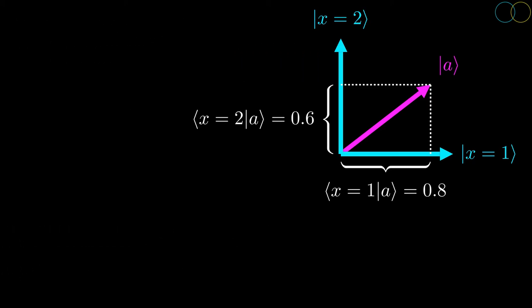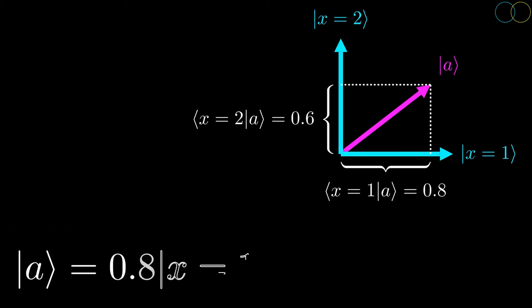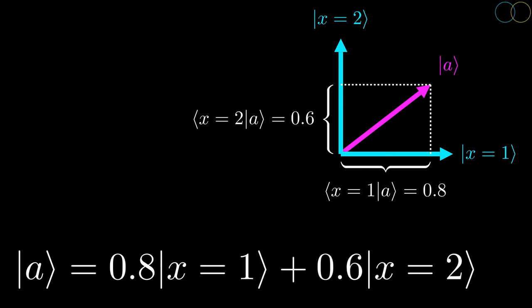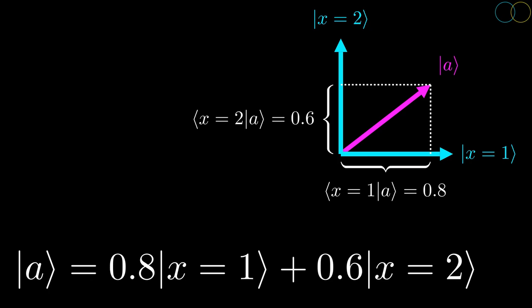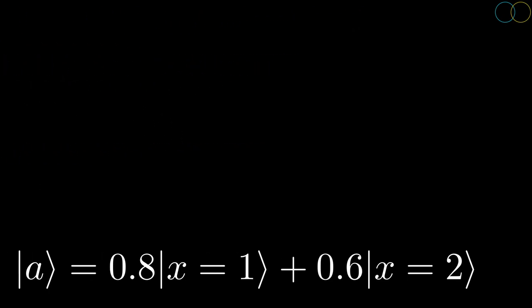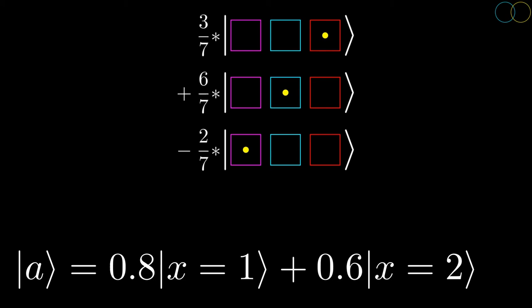We can write the state A as a linear combination of the eigenvectors of a linear transformation — in this case the position. As it turns out, the scaling factors in the linear combination are exactly the projections of A onto the eigenvectors. This occurs because eigenvectors of quantum physical linear transformations are always 90 degrees from one another. That the state can be written as a linear combination of vectors representing measurable states is the exact conclusion that we made in part 1.